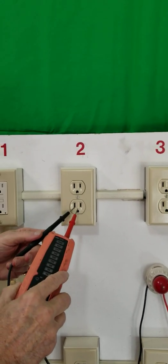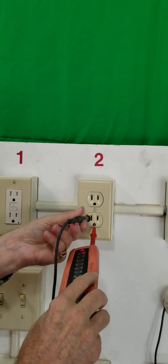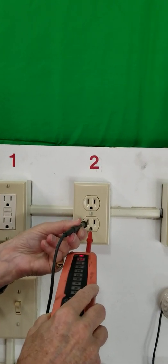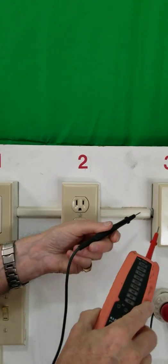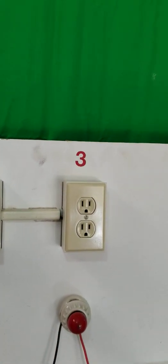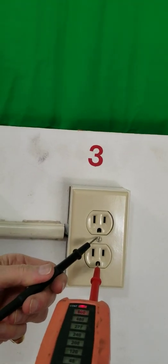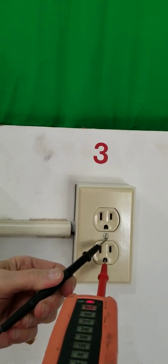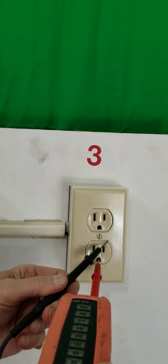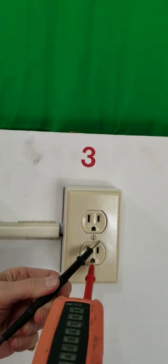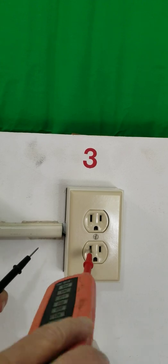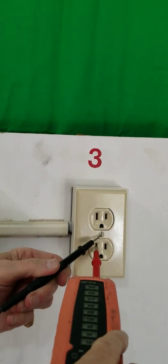On this receptacle, I went from the ground and the neutral, and I showed that I'm reading continuity. So this is properly grounded. This one here is not properly grounded. I get no continuity between the ground and the—yeah, I'm supposed to get it on that. You got the ground and the screw are on the same yoke. But if I go from the neutral, nothing.